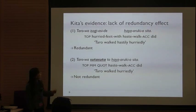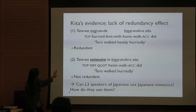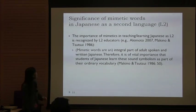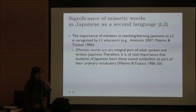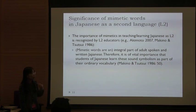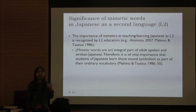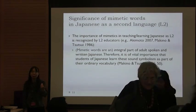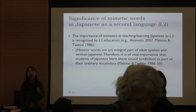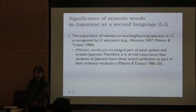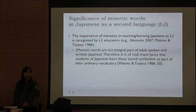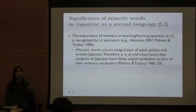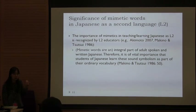Before we go on, I want to note that mimetics are recognized as very important for second language learners. Educators talk about how vital this class of words is in Japanese. We have a large inventory of these words — one dictionary I have lists 4,500 mimetics. There are also lots of mimetics-specific dictionaries. So these are important classes of words.